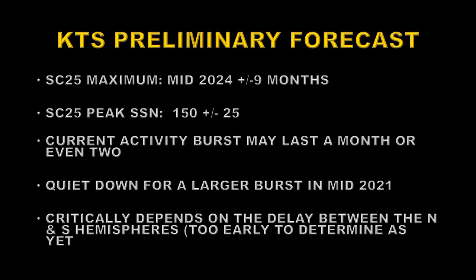So let's summarize. My preliminary forecast is that Solar Cycle 25 will reach maximum in mid-2024, plus or minus nine months. It will peak at a sunspot number of about 150, plus or minus 25. The current activity burst may last for another month or so. The Sun will then quiet down before a much larger burst that will occur in 2021 in the Southern Hemisphere. The outcome critically depends on how much delay there is between the Northern and Southern Hemispheres, and unfortunately it's too early to determine that yet.